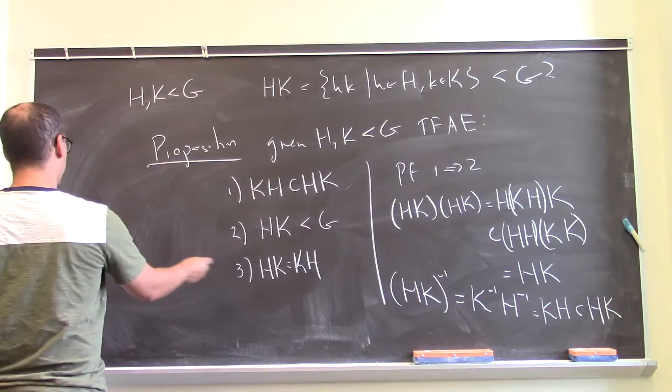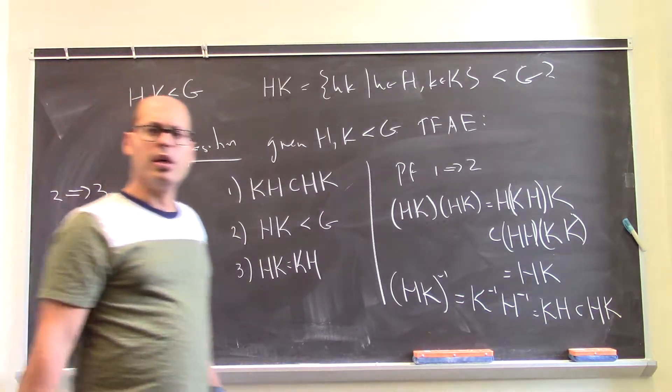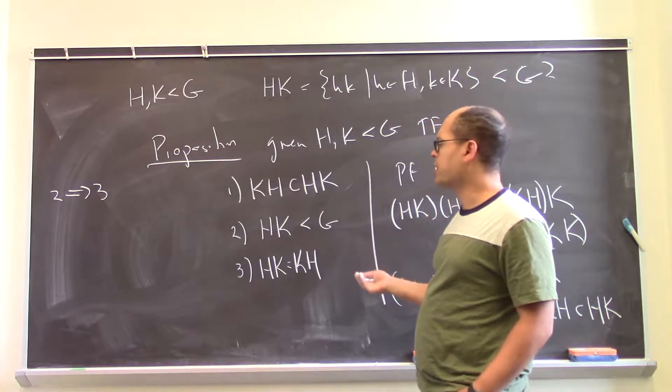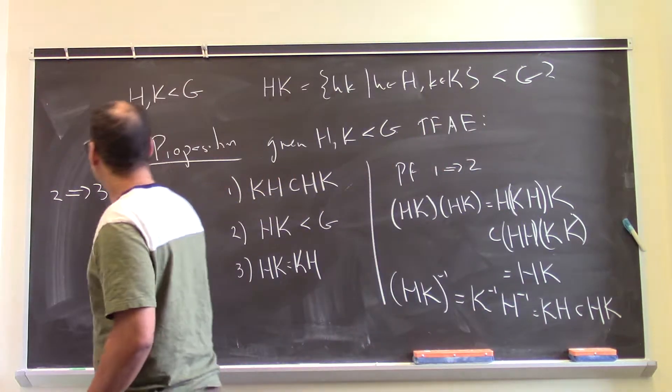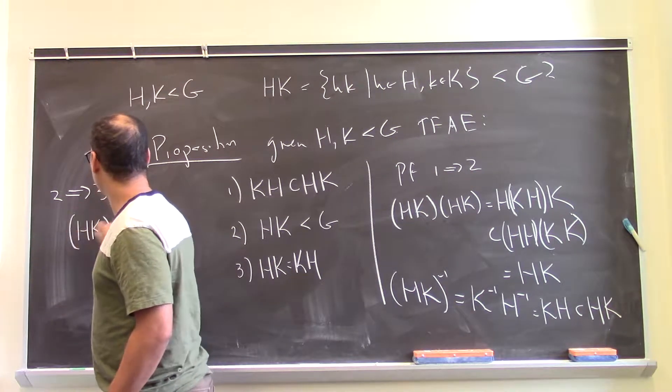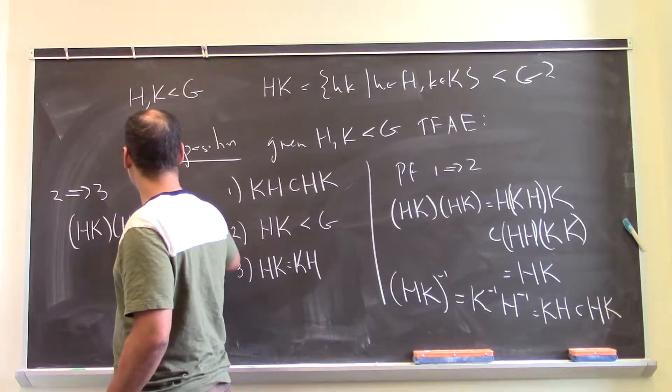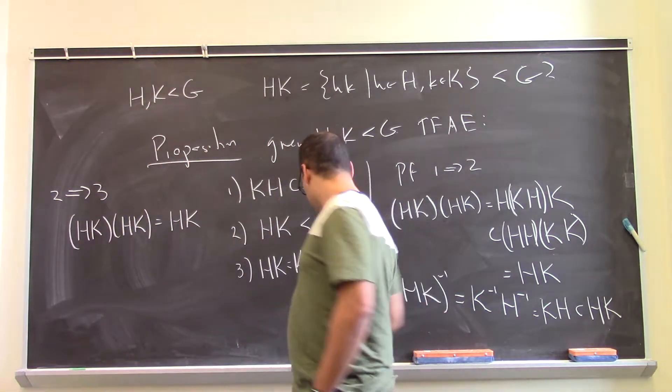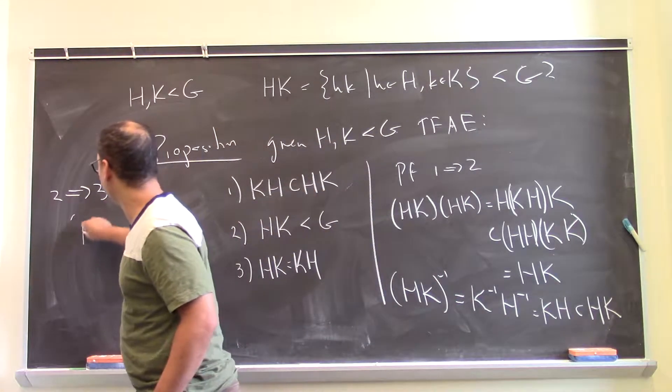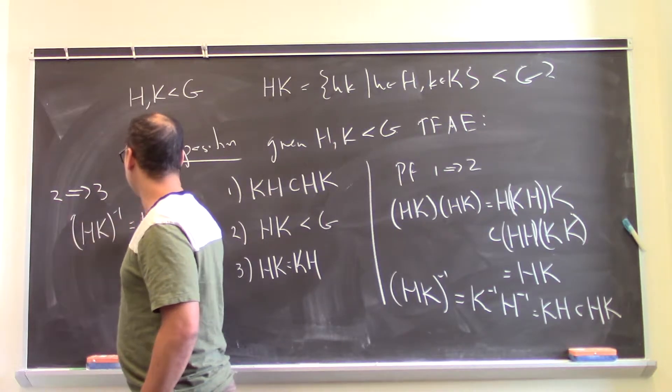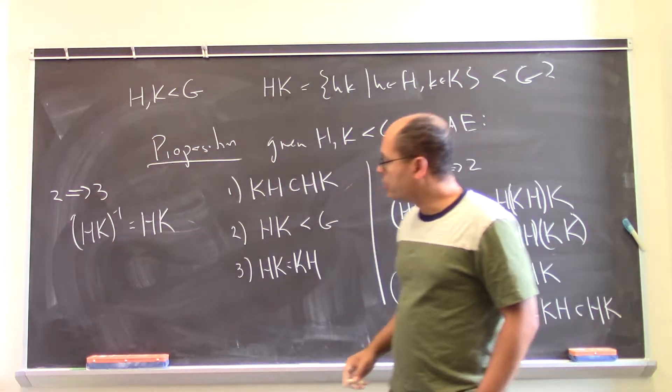How about 2 implies 3? So for 2 implies 3, I want to say, suppose I have a subgroup. Why is it that HK is KH? Well, if you have a subgroup, then if you do HK HK, that has to give you HK again. Oh, excuse me. Of course, that's true. Excuse me. But actually, what I wanted to say is that if you have HK and you do the inverse, that has to be HK again. Sorry. Right. So that's true.